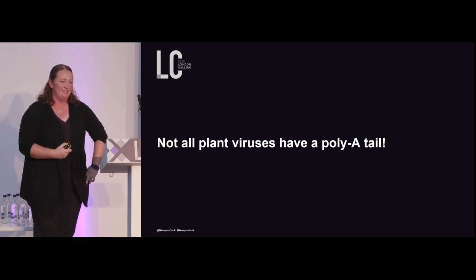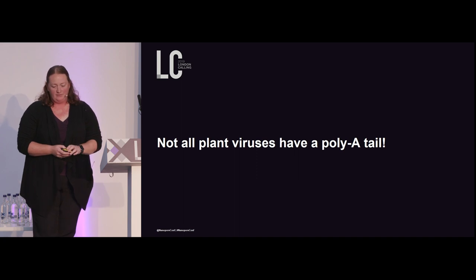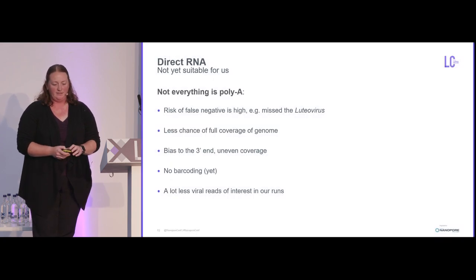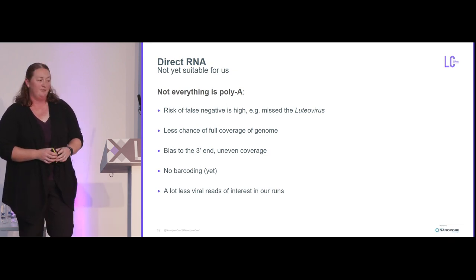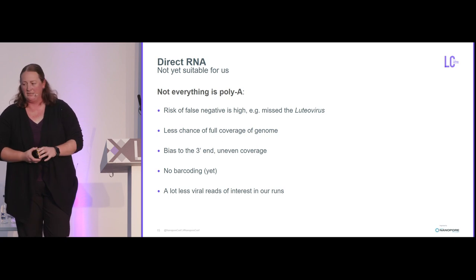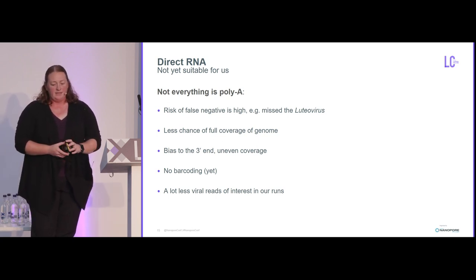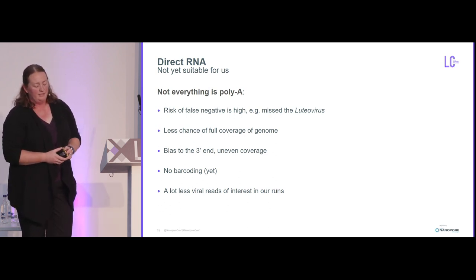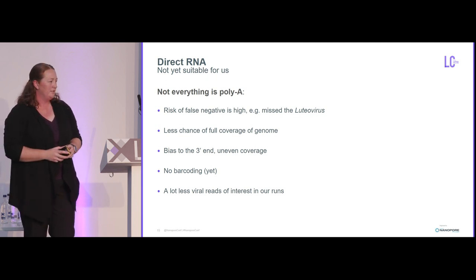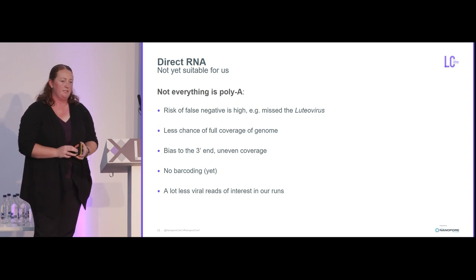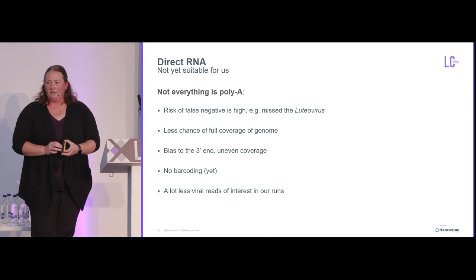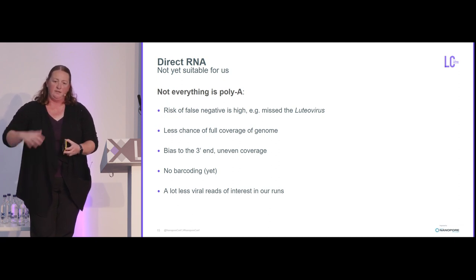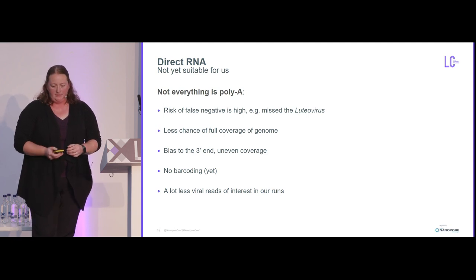Not all viruses have a poly-A tail, so a lot of this has been getting that part of the method down. Moving forward, it really opens up a lot of possibilities for us. We did try the direct RNA kit, because I'm looking for time savings, and it's a really cool tool. But for us, at the moment, the risk of false negatives is too high — we might miss a lot of viruses that are lurking there. With the poly-A tail being at the three-prime end of the genome, we've got less chance of getting full coverage of the genome. We can't barcode that either, and barcoding is a real help in the diagnostic setting to bring the cost down per sample, although Flongle is definitely going to help with that.